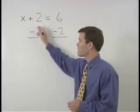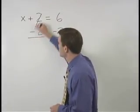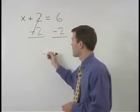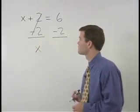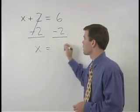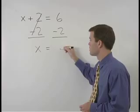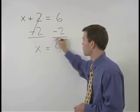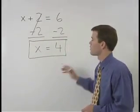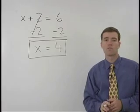So on the left side, our plus 2 and minus 2 cancel out and we're left with x. On the right side of the equation, 6 minus 2 simplifies to 4. So our answer is x equals 4.